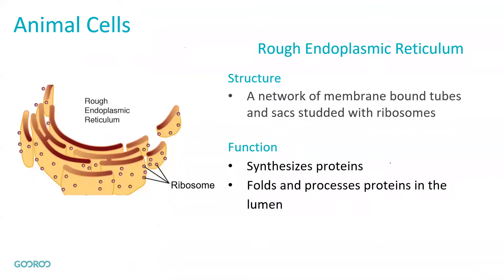The first thing we're going to learn about is the rough endoplasmic reticulum. This is a network of membrane-bound tubes and sacs that are studded with ribosomes. The function of this is to synthesize proteins, and it also folds and processes these proteins within the lumen.